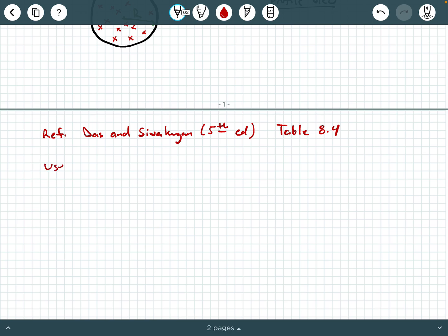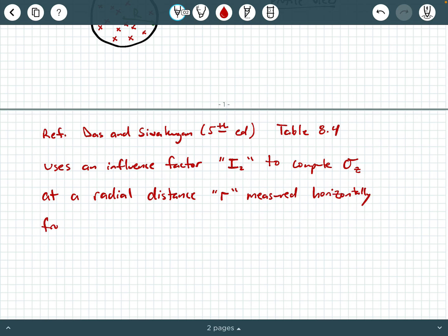we can say table 8.4 uses an influence factor, which is I sub 2. That's what this reference calls I sub 2, to compute sigma sub z at a radial distance of little r measured horizontally from the circle center.